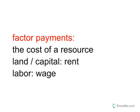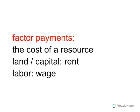Next, we've got something called factor payments. These are the cost of a resource. For example, if you are buying land for your business, the money you use to buy the land is called rent. If you're purchasing someone's labor, you're giving them a wage. That is the cost of that resource.